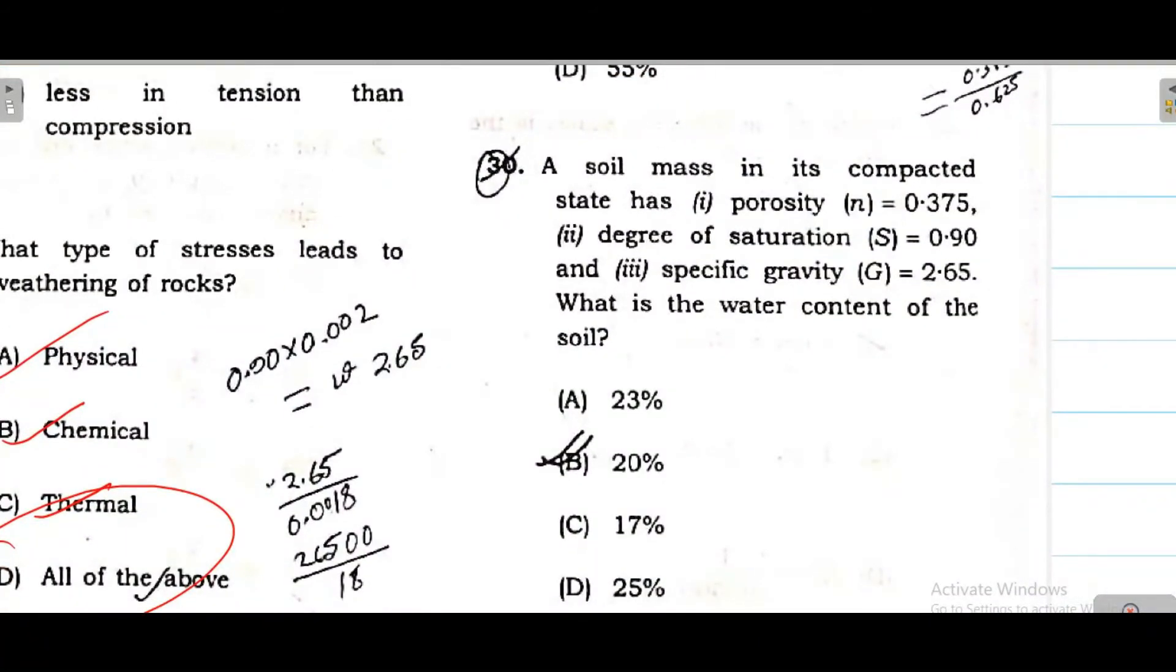Question 30. A soil mass in its compacted state has a porosity 0.375, degree of saturation 0.90, and specific gravity G is 2.65. What will be the water content? Obviously the formula S times e equals W times G. The S value is given, W value we have to find. The porosity value is given, and SR value is 0.90. This value is e equals n divided by 1 minus n. n is 0.375, 1 minus n is 0.375. Equal to W, G value is 2.65. The answer will be 0.220 something. So option number B is correct.